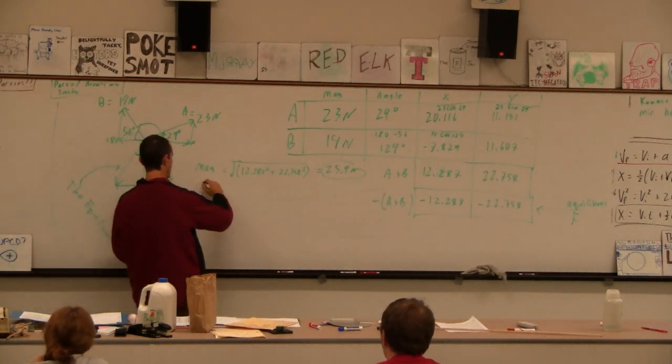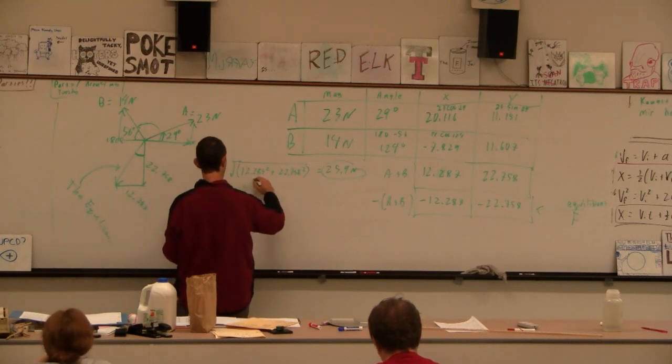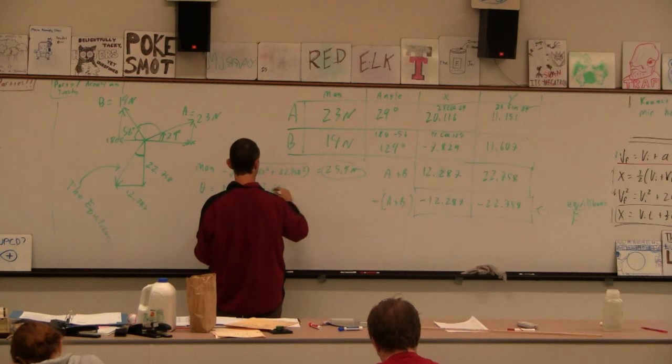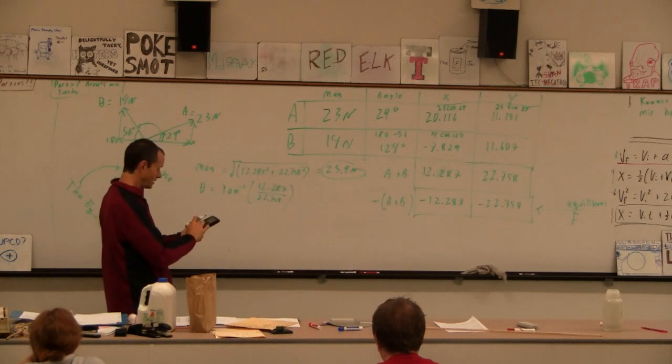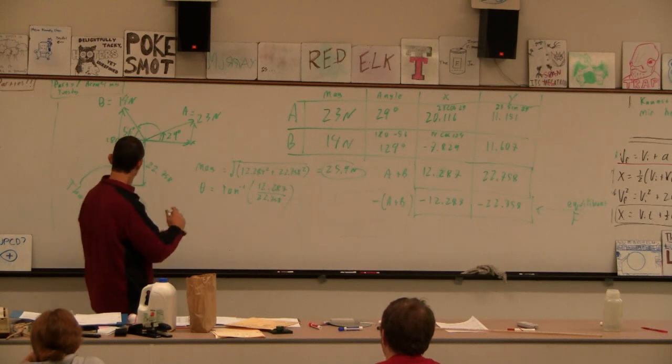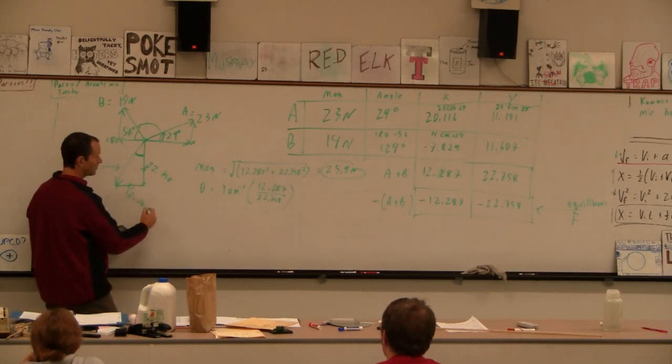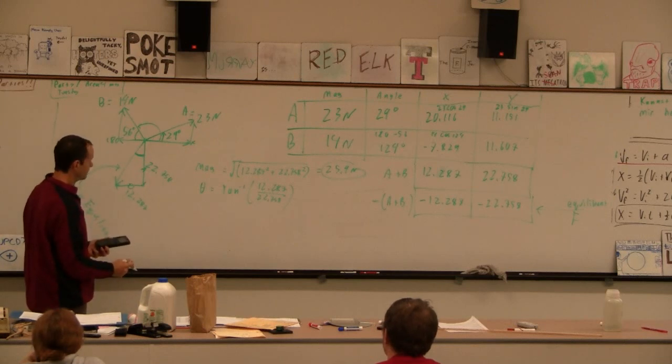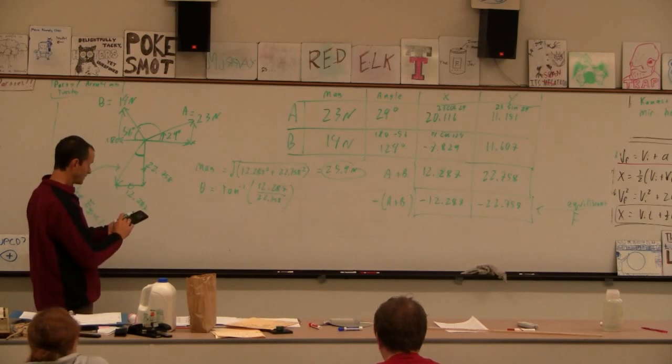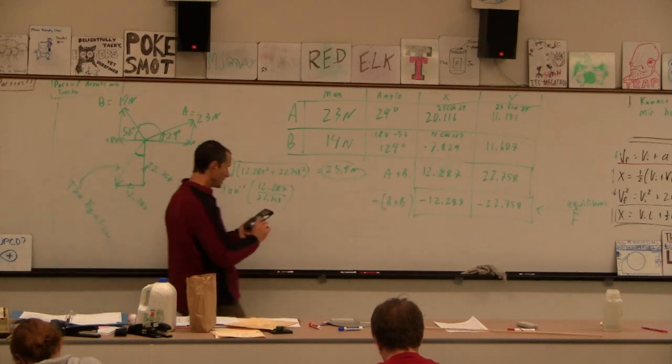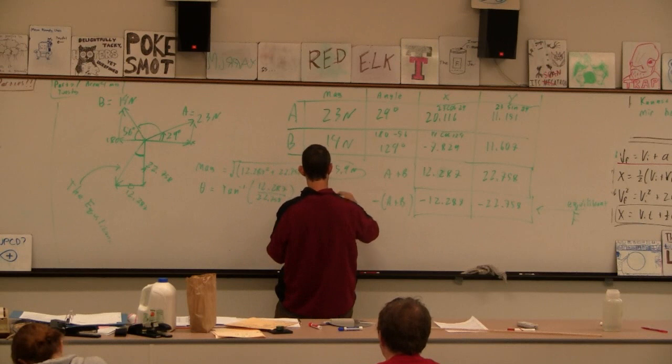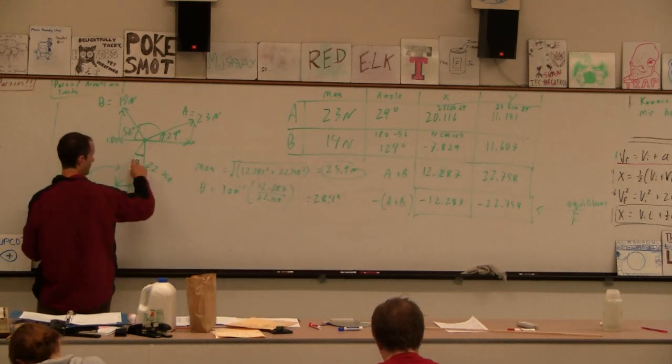That angle there is going to be inverse tan of 12.287 over 22.758. It's a second tan, opposite over adjacent. I think we're good. So that angle is like 28.4, and I would believe it. That looks like an adorable angle and it is.